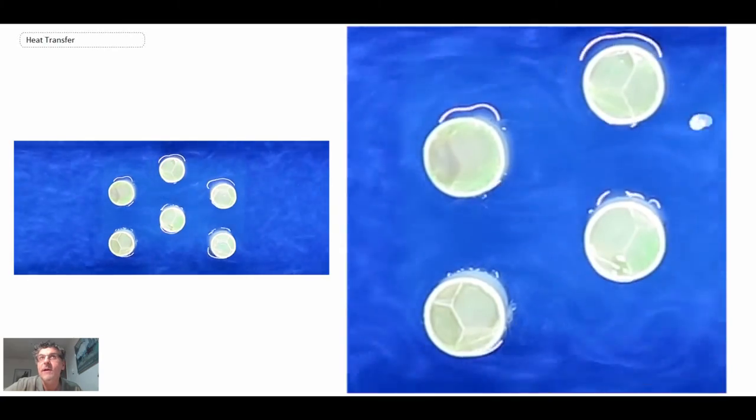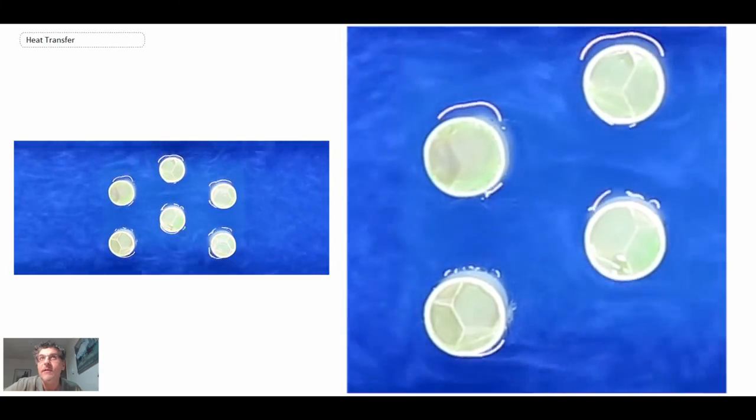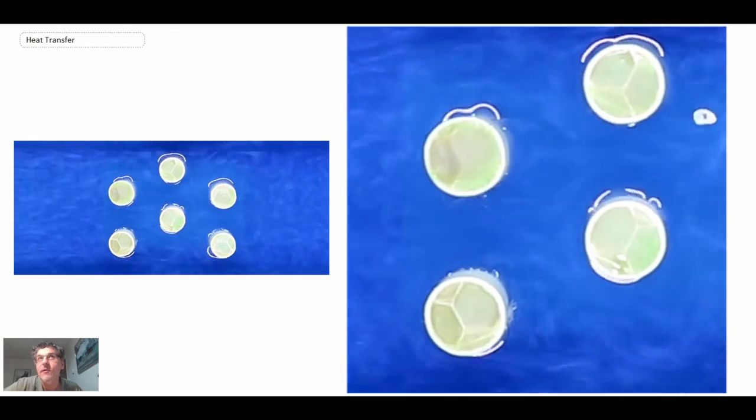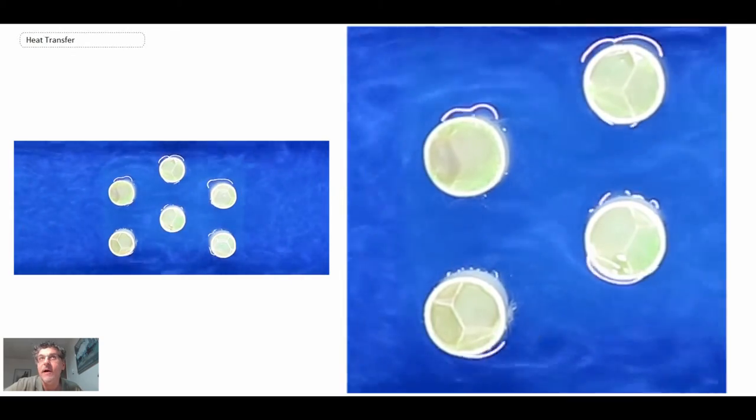And when we zoom in, we can see that the flow is undergoing fairly significant changes in direction. And again, there are strong recirculation zones behind the tubes, but not as large themselves.